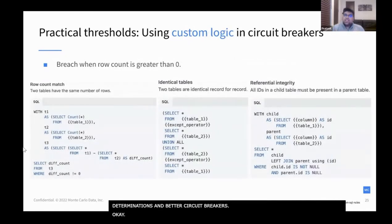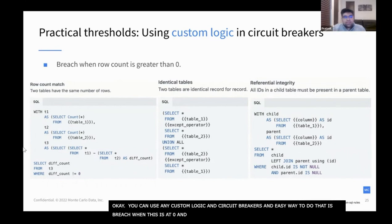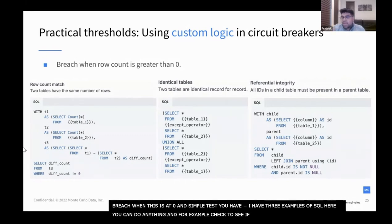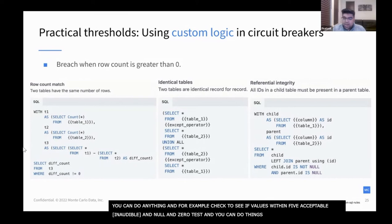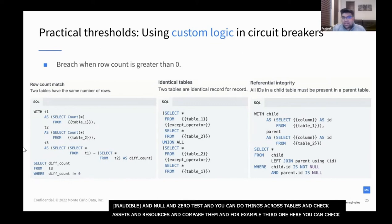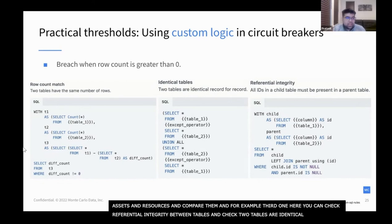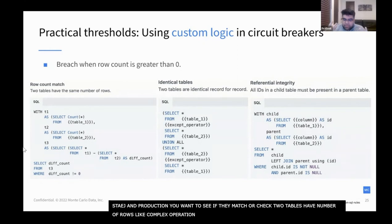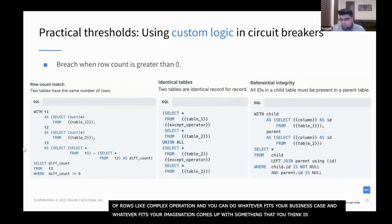Of course, you can use any custom logic in circuit breakers. A really easy way to do that is just breach when the row count is greater than zero. I have three examples of SQL here. You can check to see if your value is within five acceptable labels, you can do a null test, you can do a zero test, you can do things across tables — check other assets and resources and compare them. For example, you can check referential integrity between tables, check two tables are identical record to record, or check that two tables have the same number of rows after some complex operation. You can do whatever fits your business case and whatever you think absolutely needs to always be the case.